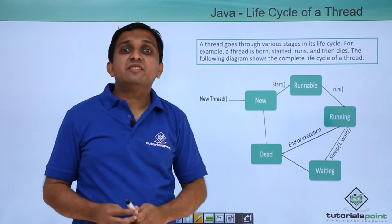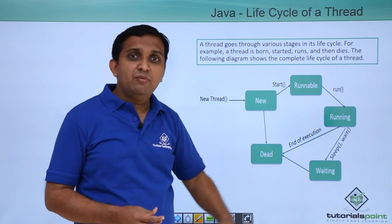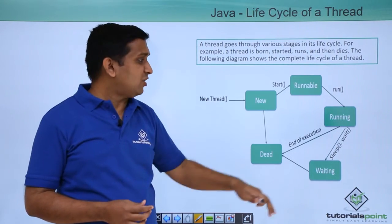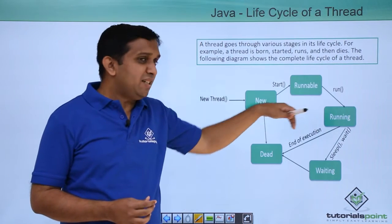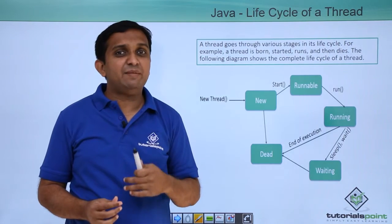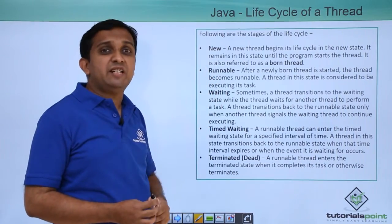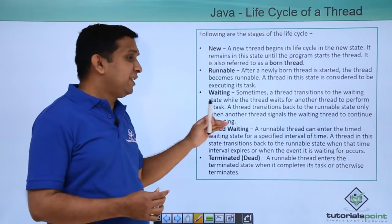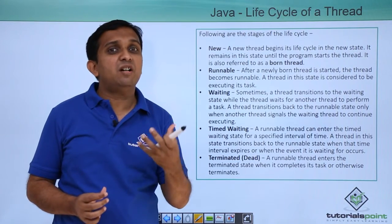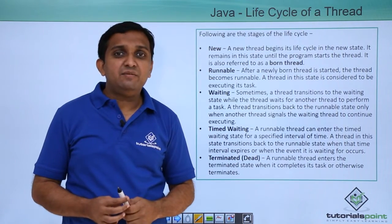If the time slot for a particular thread allocated by the processor is over, it will go to the waiting state and the processor is taken over by other threads. Or, if the task of the thread is complete, it will go to the dead state. The stages are: new state, runnable state, waiting state, timed waiting state — which means a particular thread is waiting for some event to occur — and terminated state, which is the dead state.